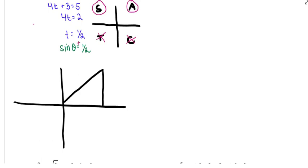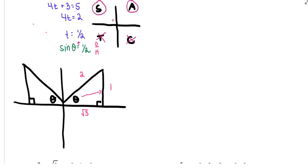In quadrant 1, I'm going to draw a triangle whose reference angle is theta. In quadrant 2, I'm going to do the same thing. Sine is the ratio between the opposite side and the hypotenuse. So opposite theta I'm going to put a 1, label the hypotenuse with 2, and the remaining side in that special right triangle is root 3. This is my 30-60-90 right triangle where the smallest angle is opposite the smallest side, so my angle here is going to be pi over 6. That is my solution for quadrant 1: pi over 6.